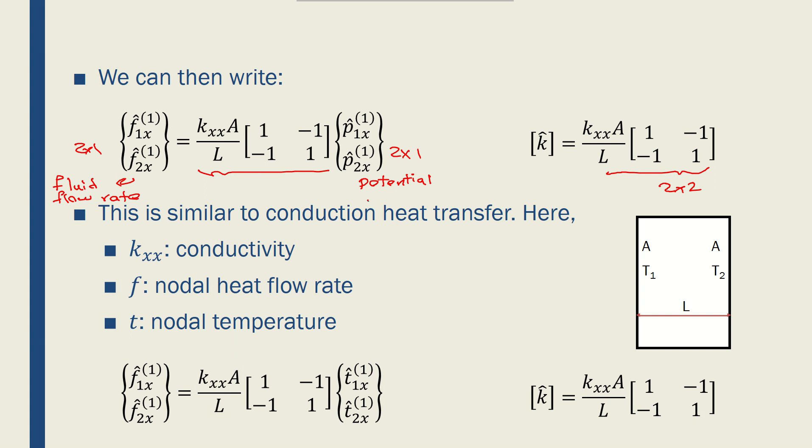This is also very similar to 1D conduction heat transfer. If you have a wall, or a slab, that one end of it is at T1, and the other end is at T2, and there's a cross section A, which could be constant or changing.